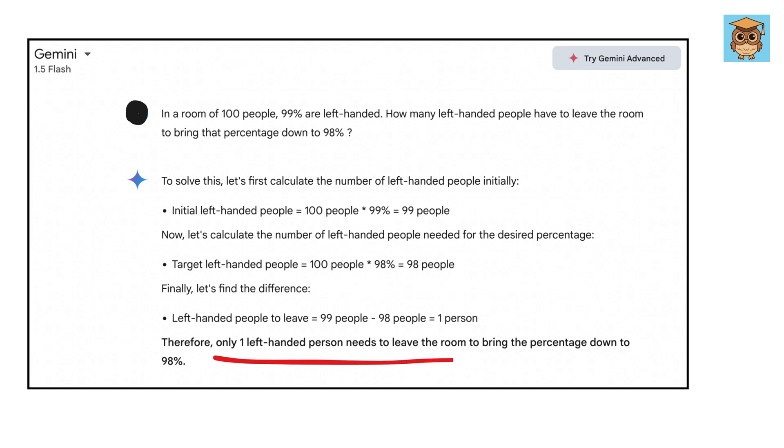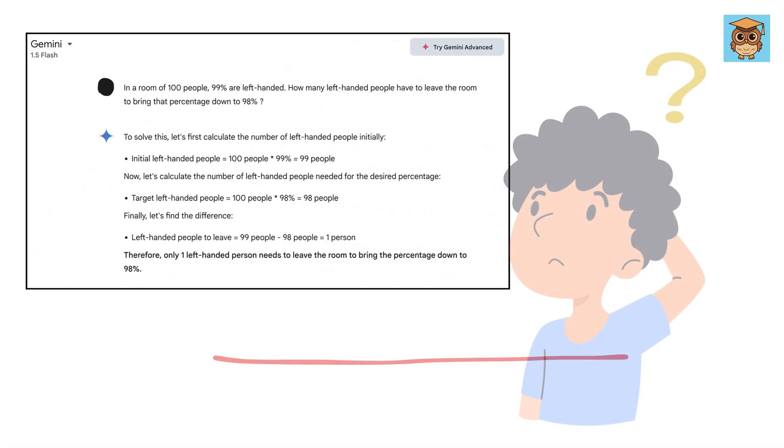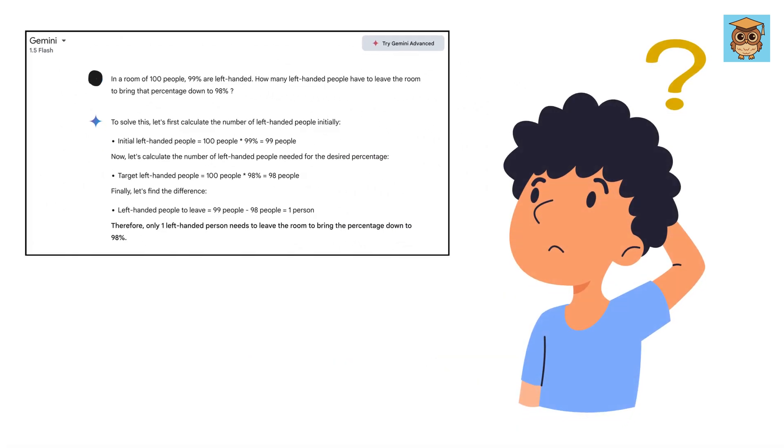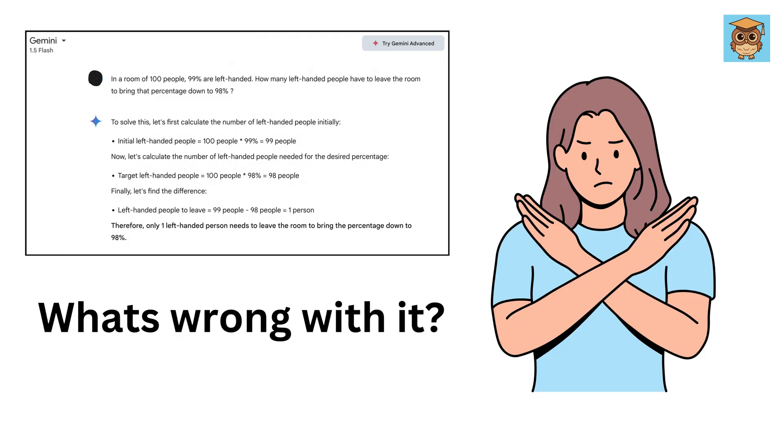Only one left-handed person needs to leave the room to bring the percentage down to 98%. And you must be thinking, yeah, what's wrong in that? But let me show you why that is incorrect.